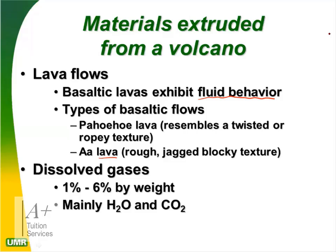Dissolved gases in lava are 1–6% by weight and mainly consist of H₂O (water) and CO₂ (carbon dioxide). Geography is a science, so you need to apply chemistry concepts — H₂O is water and CO₂ is carbon dioxide.